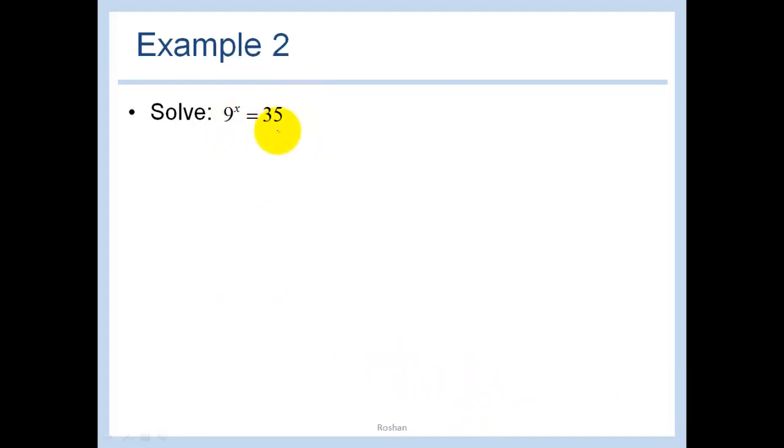In this problem here I really can't get the same basis. 35 is not 9 to any power, it's not 3 to any power, and so what I'm going to do, and this is what logarithms are for, is I want to just get x here. I'm purposely putting some space here, and now if I took the log base 9 of this side I would just get x out. But since I did it to the left I must also do it to the right, and so we have x equals log base 9 of 35.